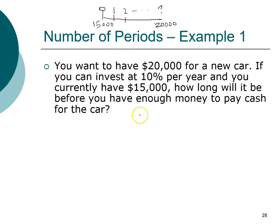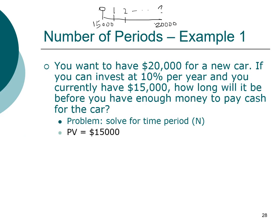The problem we are asked to solve is the number of time periods. The information we have is fifteen thousand dollars as our present value, future value is twenty thousand dollars, and our interest rate is ten percent. The timeline gives us all the information that we need.